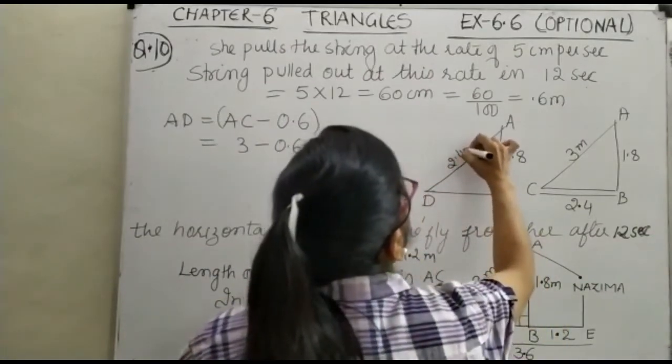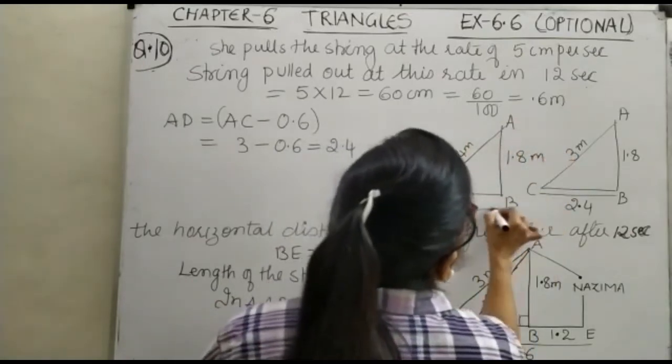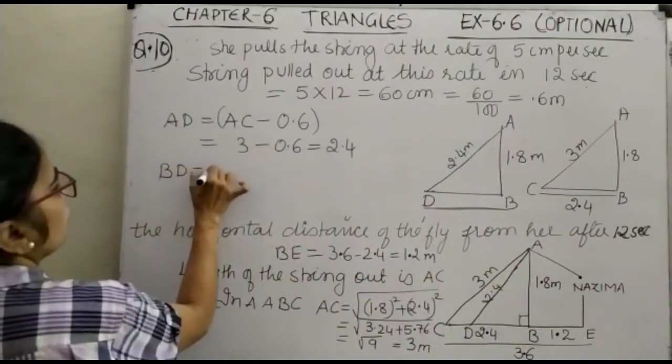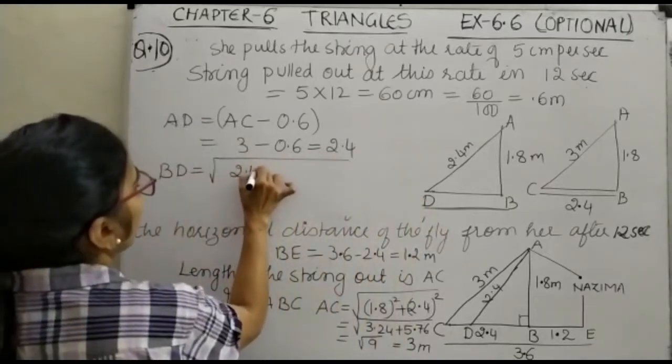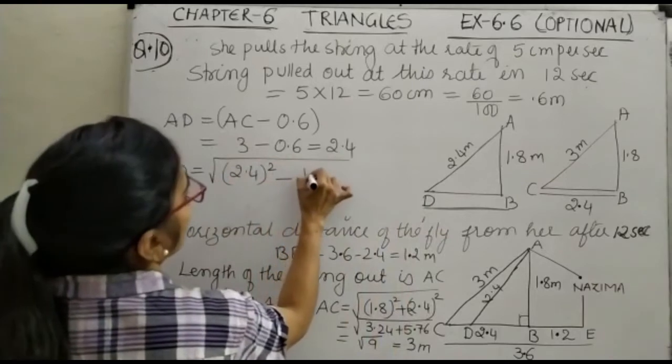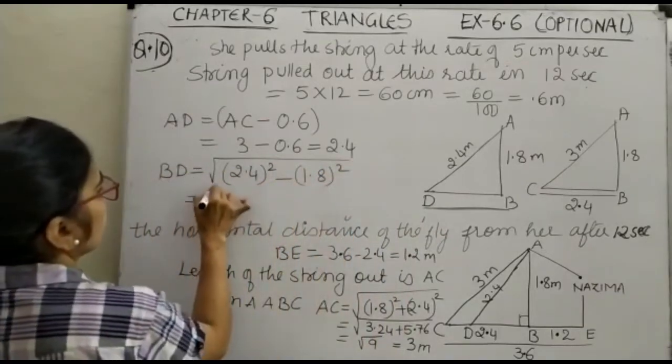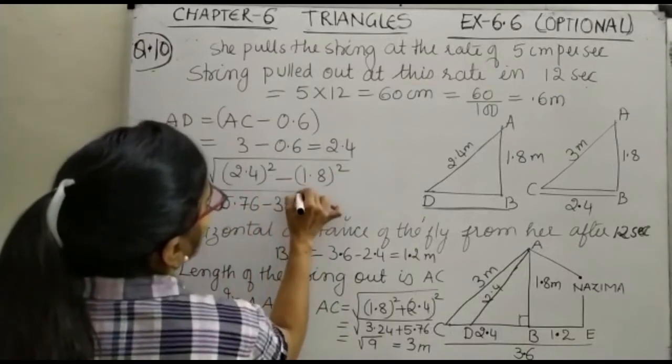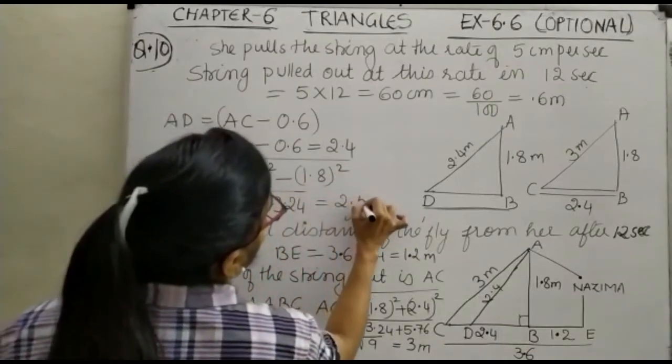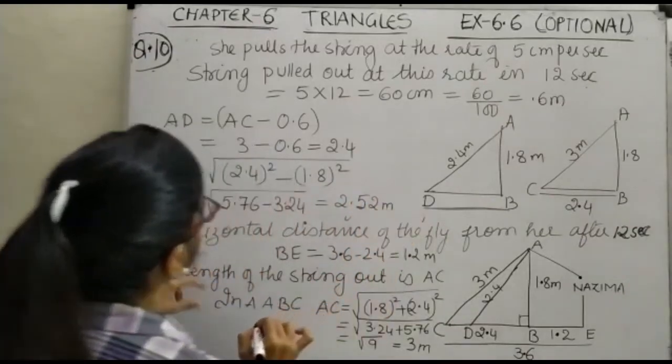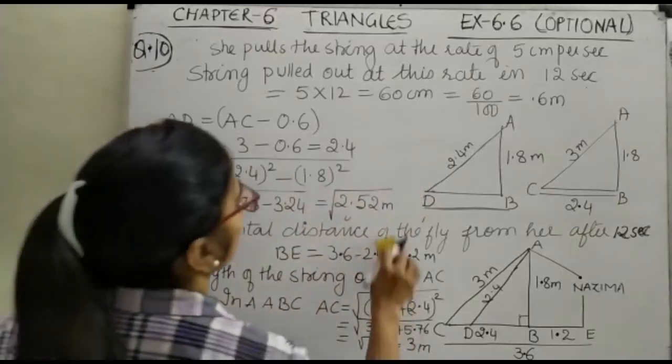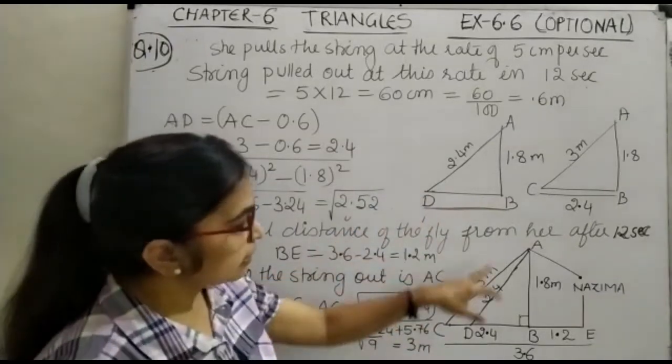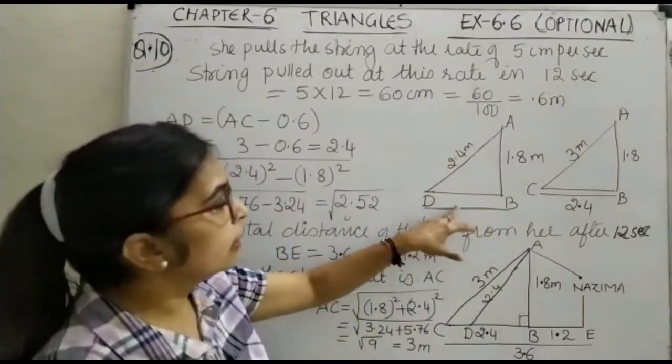After 12 seconds, the position of the fly is at point D and the new length AD becomes your 2.4. It is 2.4 meter. It is 1.8 meter. You will find out this BD. Now your BD is equal to under root 2.4 the whole square minus 1.8 the whole square. So this is your 5.76 minus 3.24 which will give you 2.52 meter.